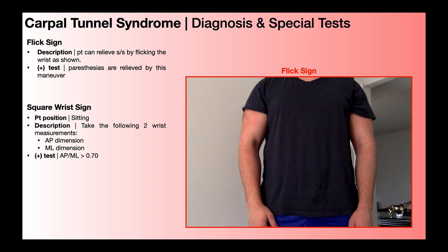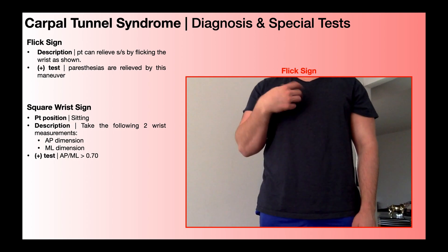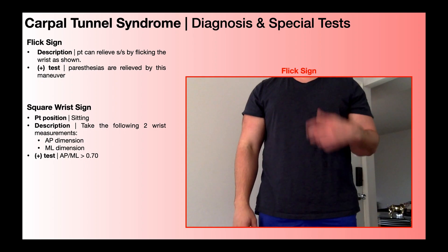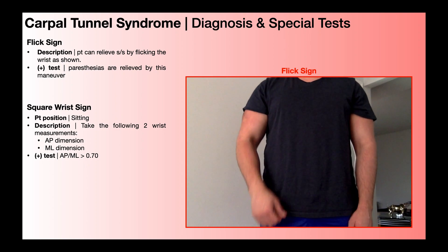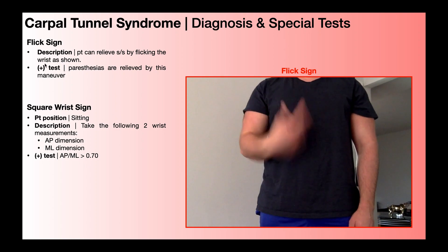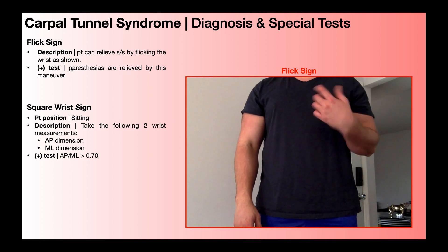The flick sign is not so much a special test — it's more something the patient reports that relieves their paresthesias, though if they already have paresthesias during the exam, you can try it. The patient flicks their wrists, and this sometimes relieves the paresthesias. You can consider it a positive sign if paresthesias are relieved or reduced by this maneuver.